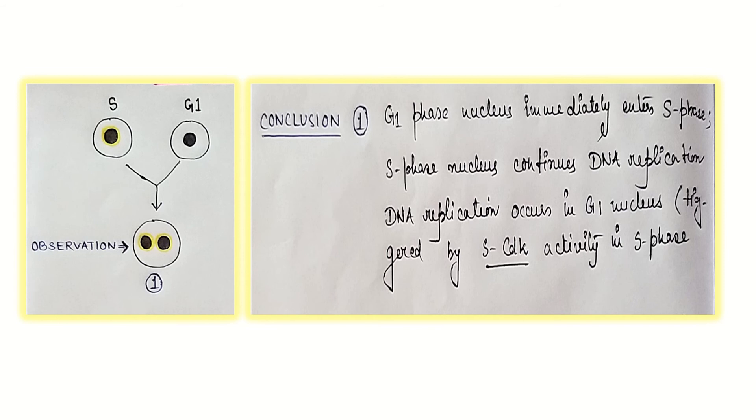First, in the first picture what we see, we are seeing that two cells are fused. One from the S phase and the other from G1 phase. What happens? What is the observation? We have numbered it as one. We can see that the resultant cell has got two nuclei.